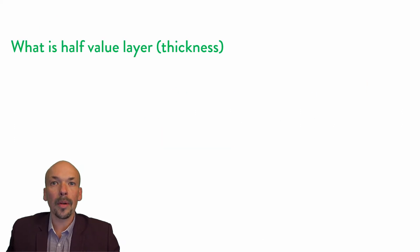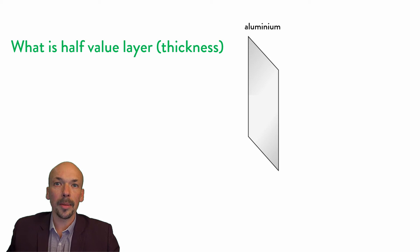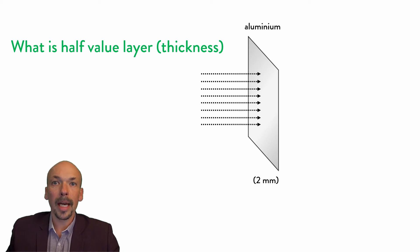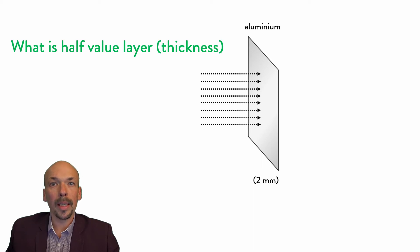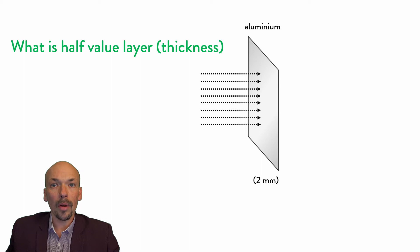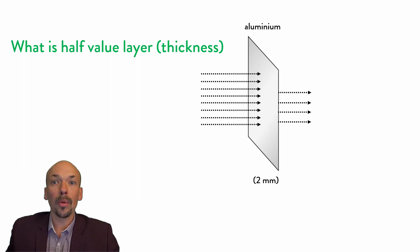Imagine you have an aluminium sheet with a thickness of 2 mm and radiation will fall on it. The half value layer will be the layer — the thickness of the aluminium — where half of the radiation that fell on it will penetrate it.